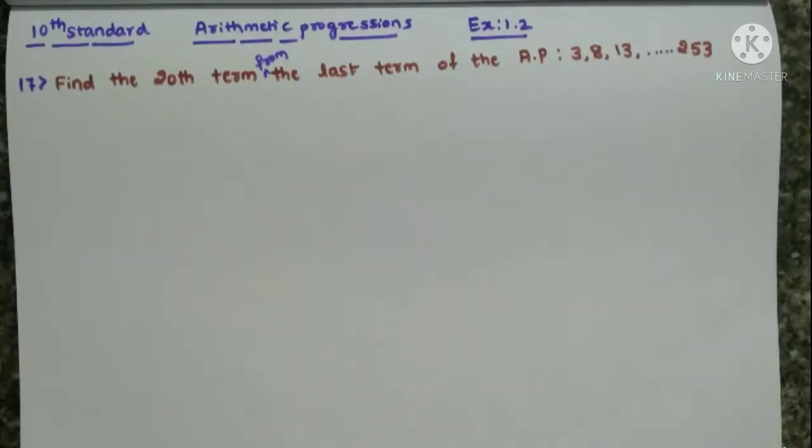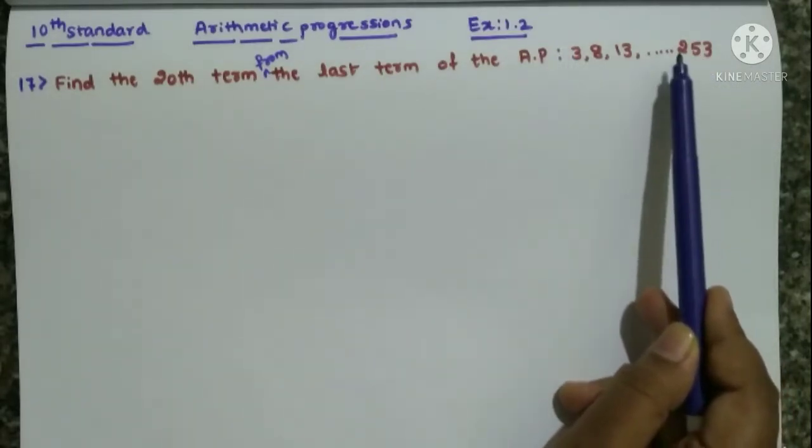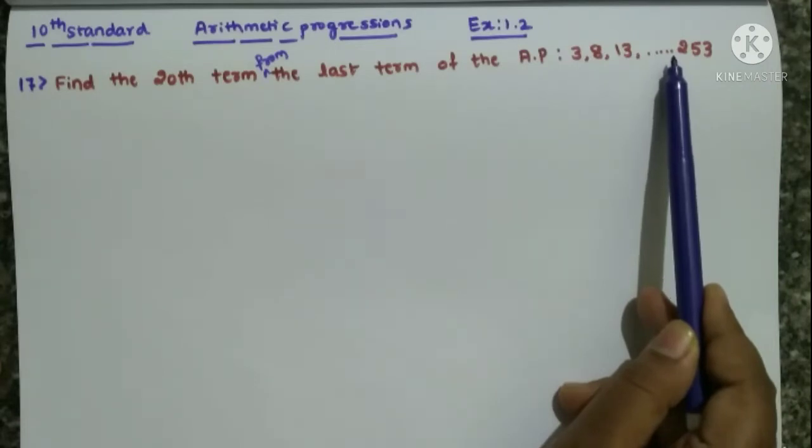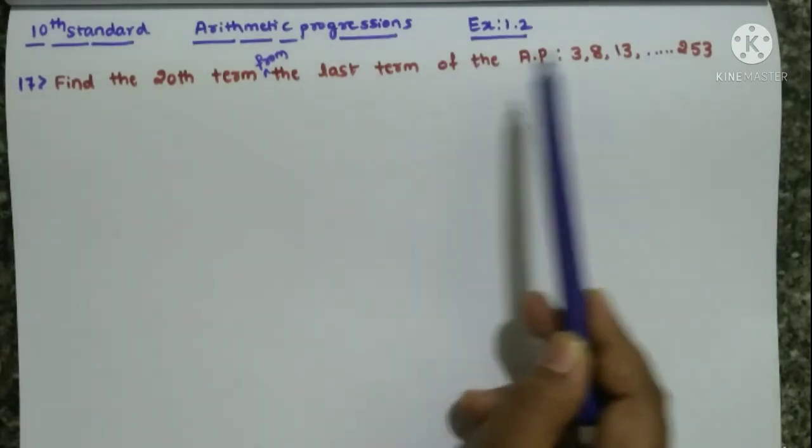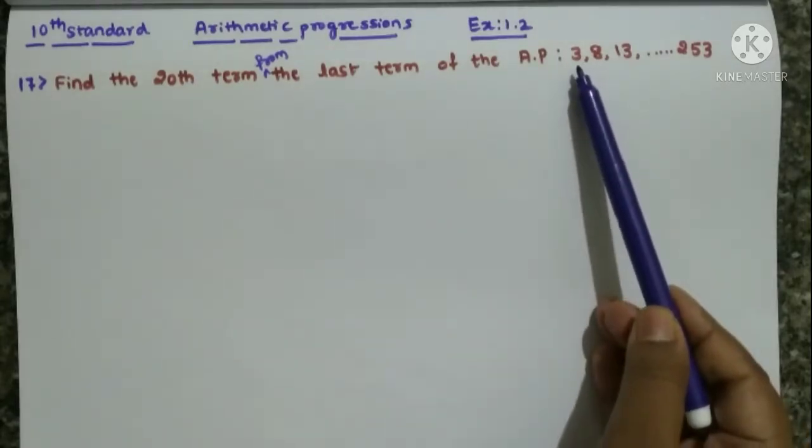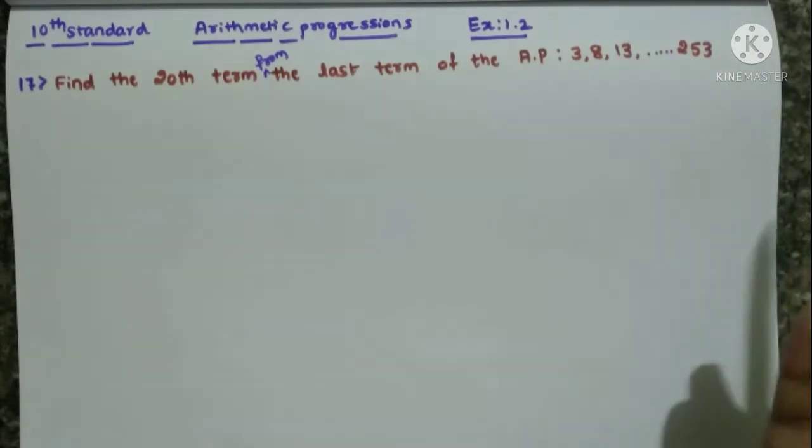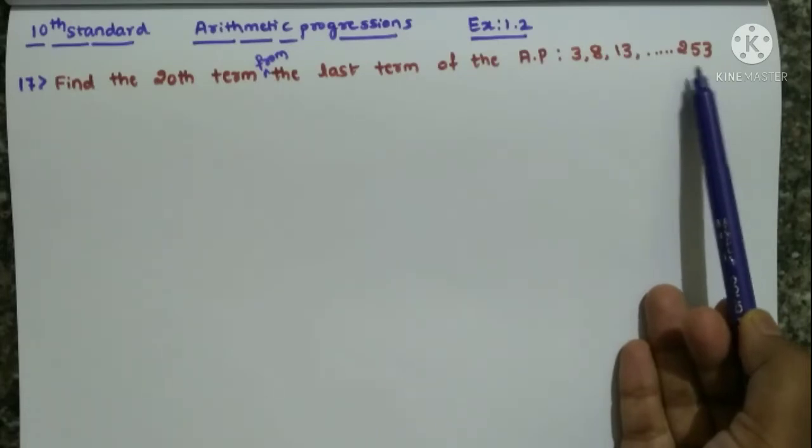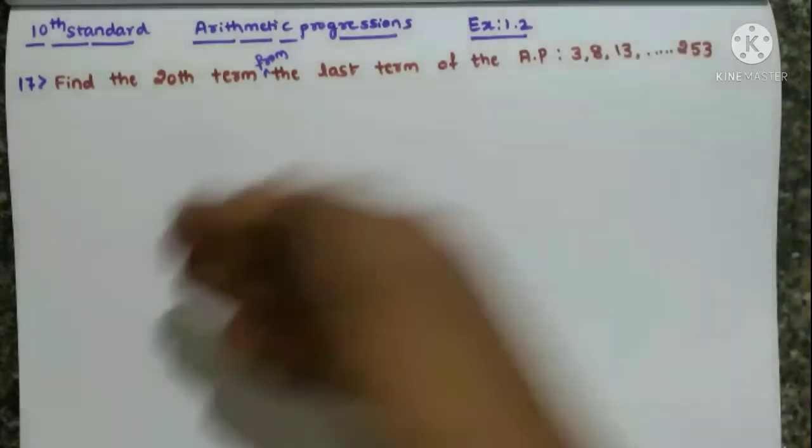Here they are asking to find the 20th term from the last, which is the last term 253. From this side, you have to consider this as the first term. Next, before this will be the second term, then before that the third term. We want to find the 20th term from the last, not from the starting.